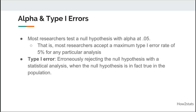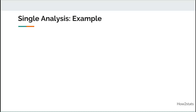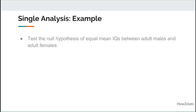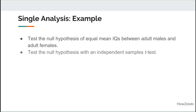The same thing applies with a correlation — you might state that there's a relationship between two variables, when in fact in the population there is no relationship at all. A more concrete example: you might test the null hypothesis of equal mean IQs between adult males and adult females, and you can test such a null hypothesis with the independent samples t-test.